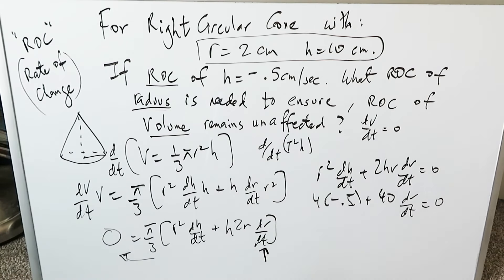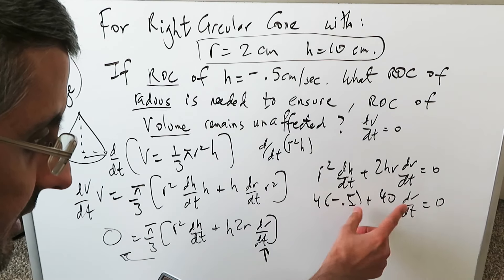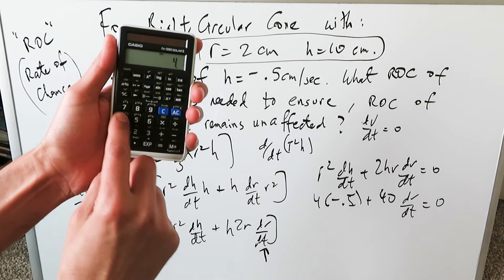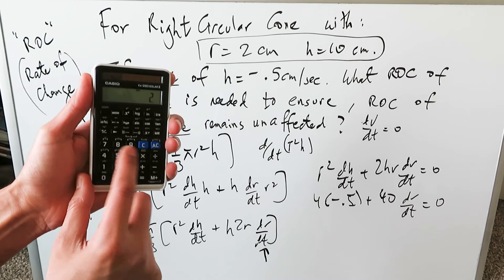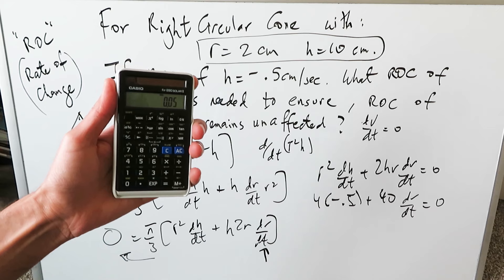You're basically just doing a simple algebra question here, solving for an unknown. Move this to the other side and divide by 40. You have 4 times 0.5, which is 2. Take it on the other side, it becomes positive 2. Divide by 40 and you're getting 0.05.